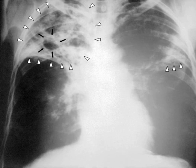Progression from TB infection to overt TB disease occurs when the bacilli overcome the immune system defenses and begin to multiply. In primary TB disease, this occurs soon after the initial infection. However, in the majority of cases, a latent infection occurs with no obvious symptoms. These dormant bacilli produce active tuberculosis in 5–10% of these latent cases, often many years after infection. The risk of reactivation increases with immunosuppression, such as that caused by infection with HIV. In people coinfected with M. tuberculosis and HIV, the risk of reactivation increases to 10% per year. Studies using DNA fingerprinting of M. tuberculosis strains have shown reinfection contributes more substantially to recurrent TB than previously thought, with estimates that it might account for more than 50% of reactivated cases in areas where TB is common.